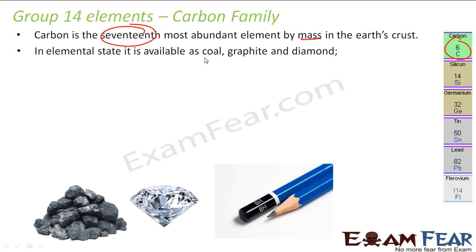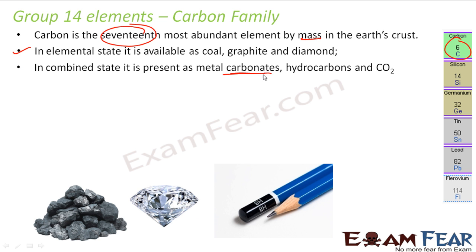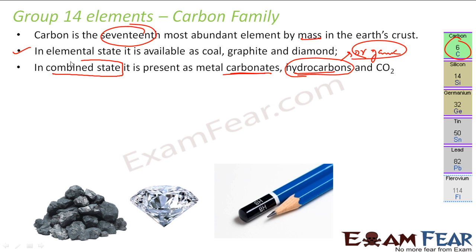Carbon exists in various allotropic forms: coal, diamond, graphite, coke, and charcoal. In elemental form it exists as coal, graphite, and diamond. In the combined state it is present as metal carbonates, hydrocarbons — the entire organic chemistry branch is for hydrocarbons — and also as carbon dioxide.